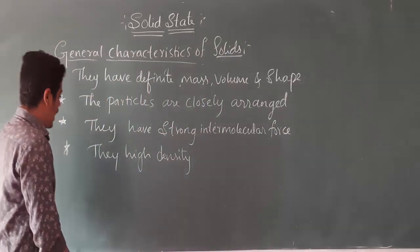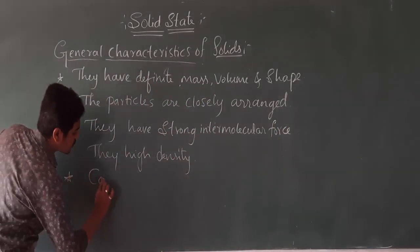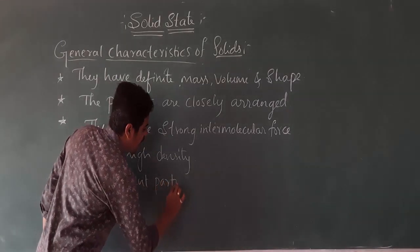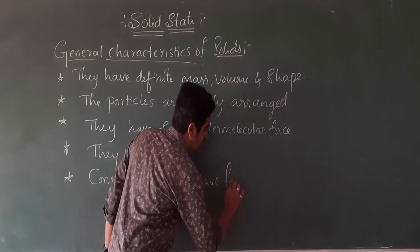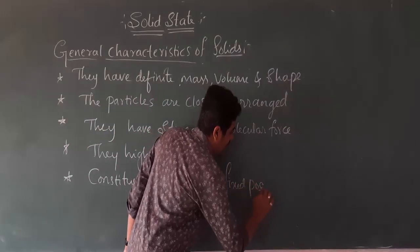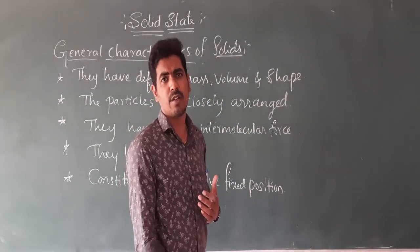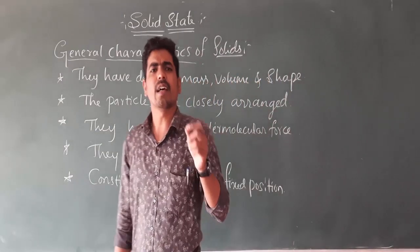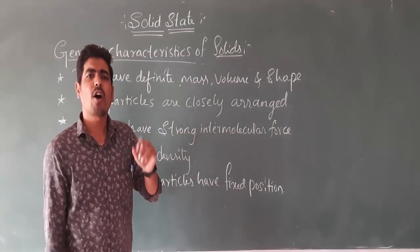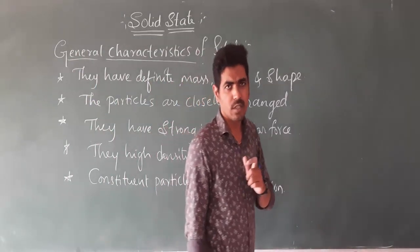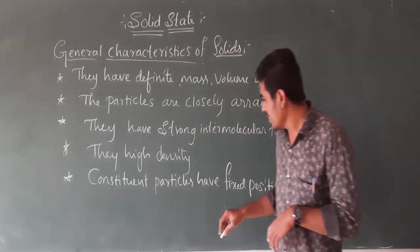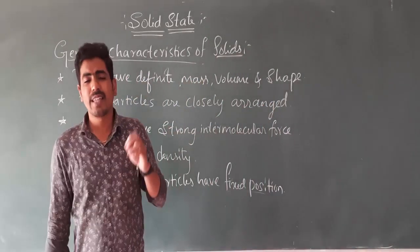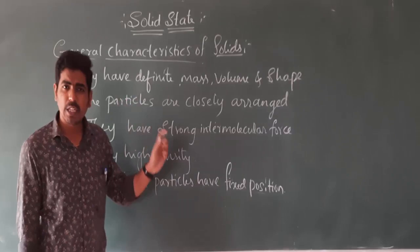Another property is that the constituent particles have fixed positions. They can oscillate about their mean position, but they won't move from one place to another. They will remain in their original site only, but they can oscillate — either to-and-fro or back-and-forth — remaining in their position. So they have fixed positions and can only oscillate about their mean position.